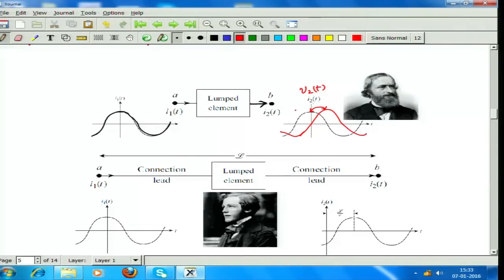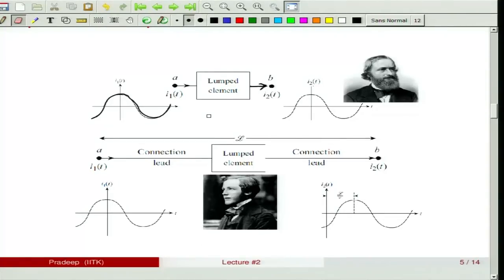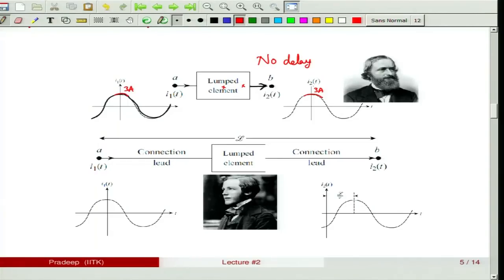Looking carefully: I1(t) must equal I2(t). As I1 goes to, say, 3 amperes, I2 follows the same value at the same instant. The moment current source I1(t) is connected to the lumped element, I2(t) follows without any delay. This absence of delay — regardless of where along the lumped circuit element the current is measured — is the defining characteristic of a lumped element.